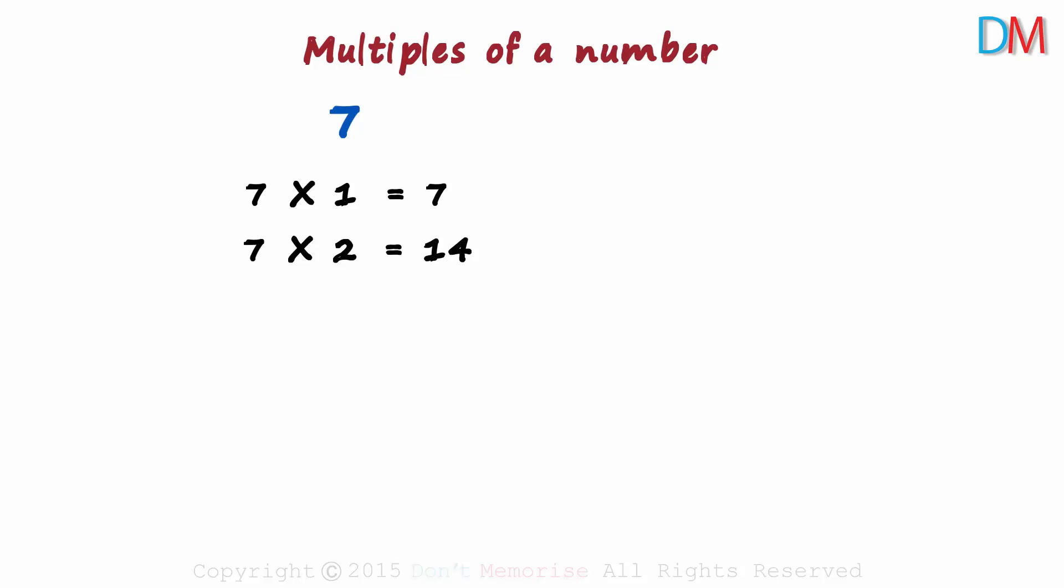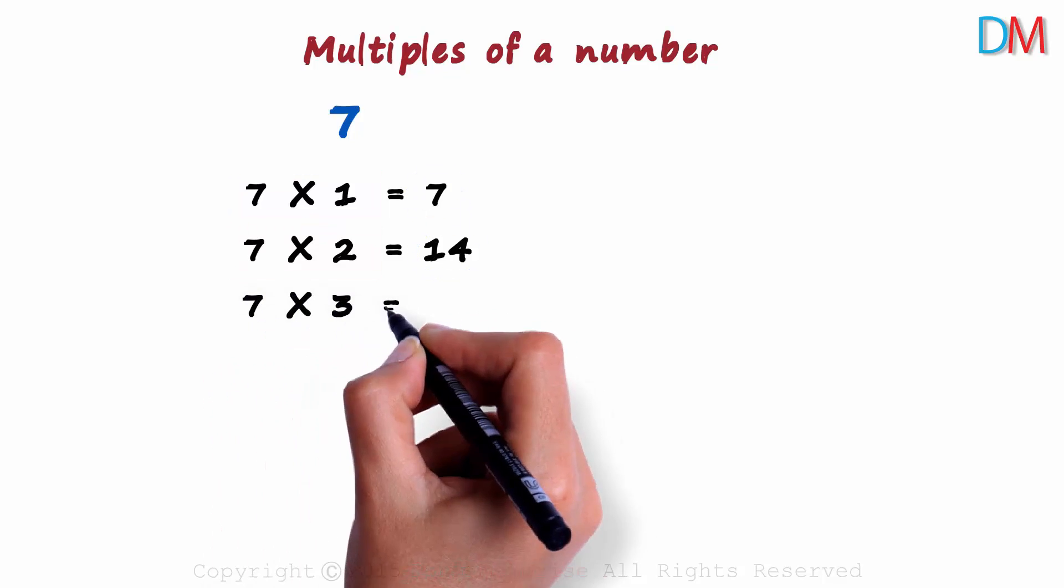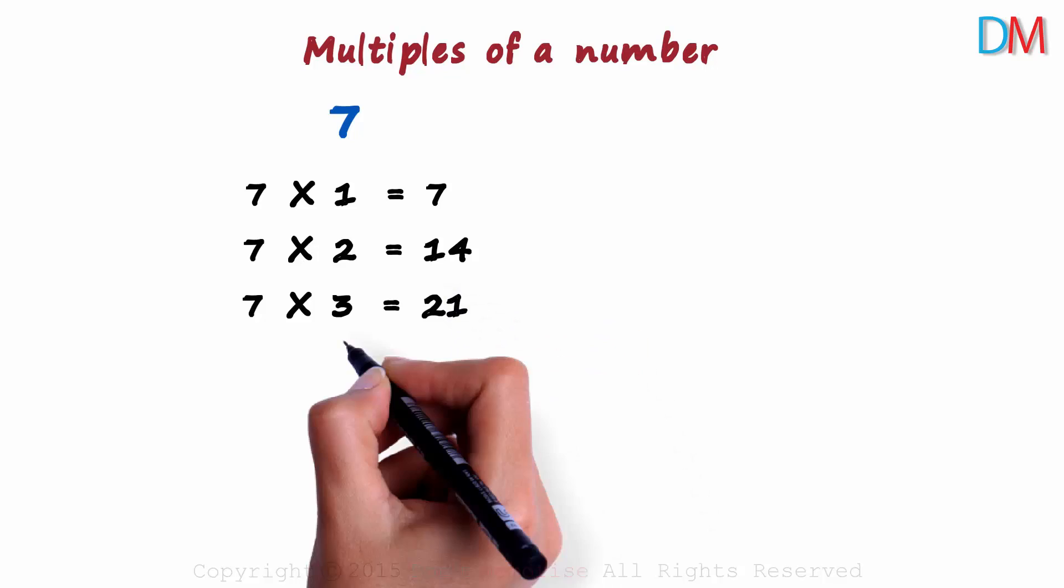The word says it all. A multiple. If a number is multiplied with 7, we get 7's multiple. And 7 multiplied by 3 is 21. And the list would continue forever.